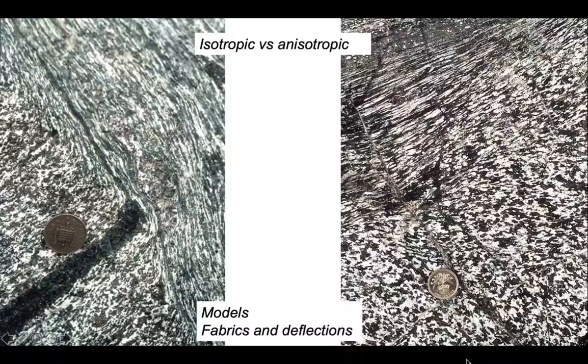So we want to look at models for the development of these zones of anisotropy, shear zones. We'll look at the way that fabrics develop in these shear zones and the way in which markers deflect into them as well.